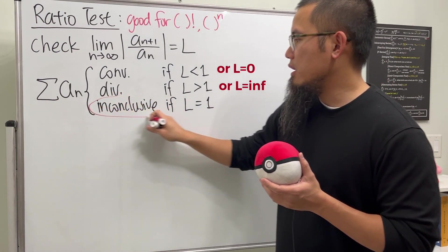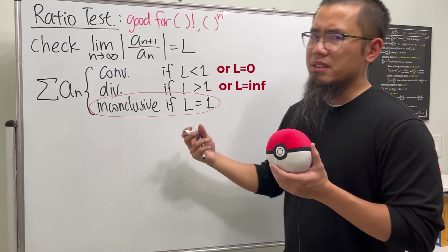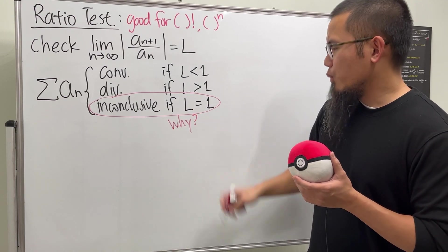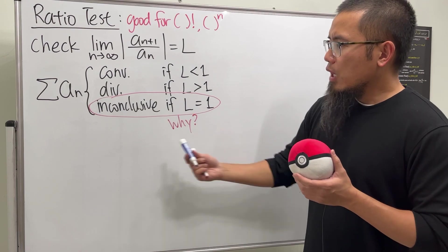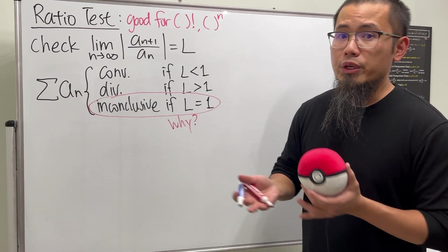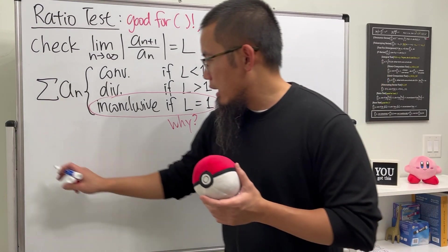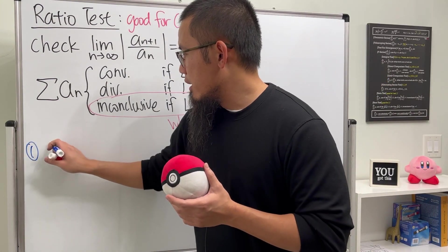That means that we have to try another test. But why is that? Well, let's talk about it. Of course, inconclusive means that it can go either way, so the best thing for me to do is to give you guys examples.